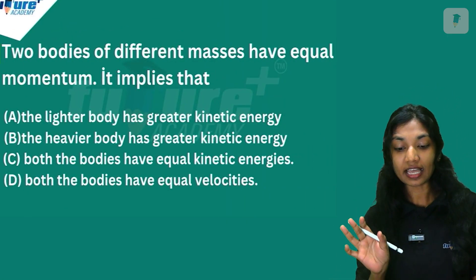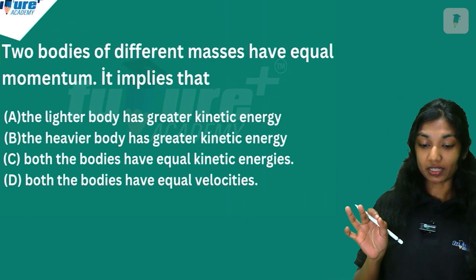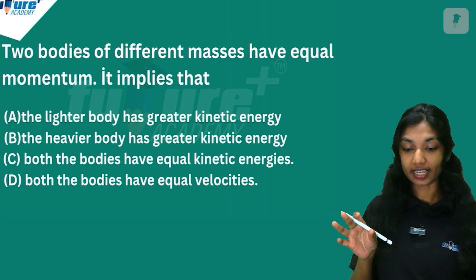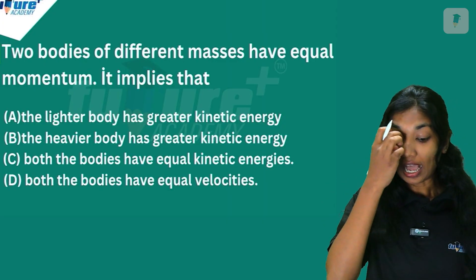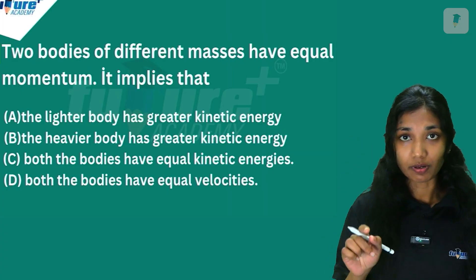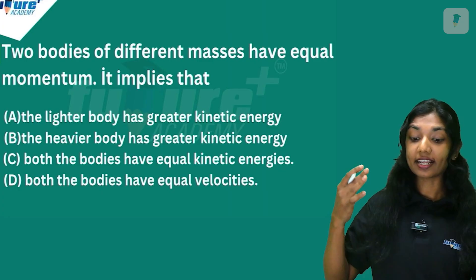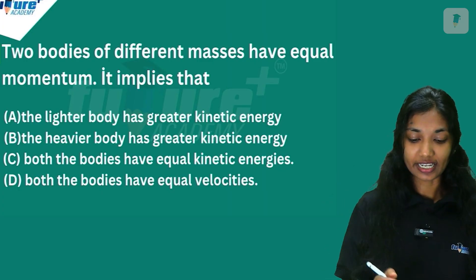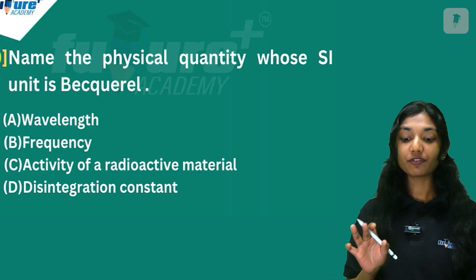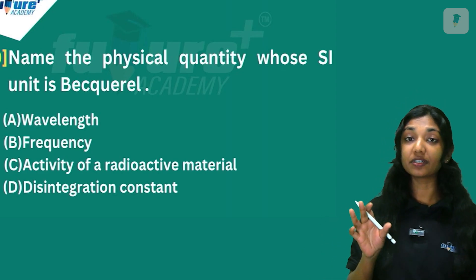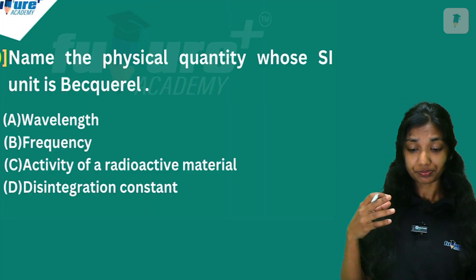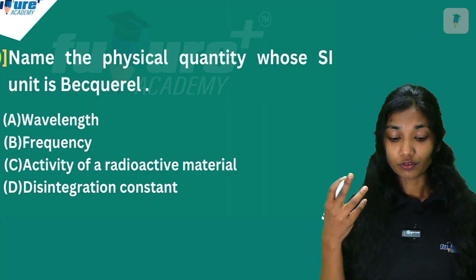Next question: Two bodies of different mass have equal momentum. Which has greater kinetic energy? Kinetic energy is inversely proportional to mass when momentum is equal. So the lighter body has greater kinetic energy.